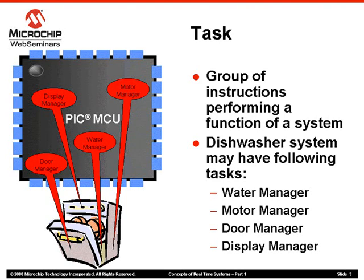For example, in a dishwasher system, the following tasks may exist. First, Water Manager — this task manages the water intake and drain. Second, Motor Manager — this task manages the direction and speed of a motor according to the selected wash cycle. Third, Door Manager — this task tracks the status of the dishwasher door and informs other tasks of the current status or any change in the status. Fourth, Display Manager — this task tracks the status of various functions of the dishwasher and displays it on the LCD mounted on the front panel.